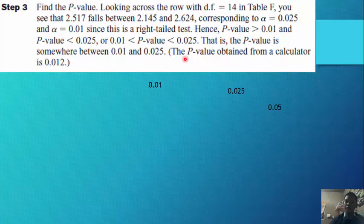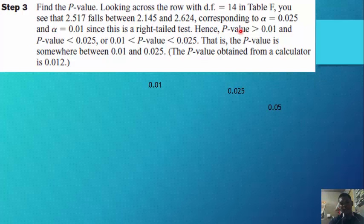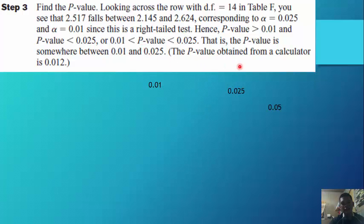Step 3: Find the p-value. Looking across the row with degrees of freedom of 14 in the table, 2.517 falls between 2.145 and 2.624, corresponding to alpha of 0.025 and alpha of 0.01. Since this is a right-tailed test, the p-value is greater than 0.01 and less than 0.025.